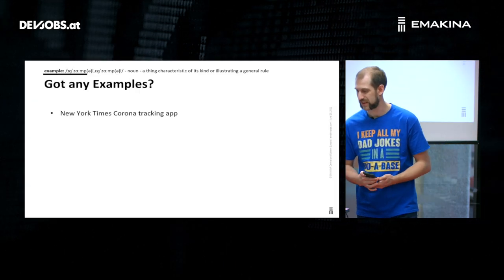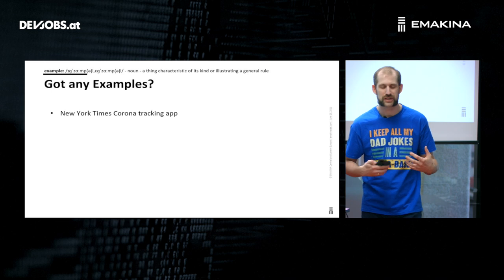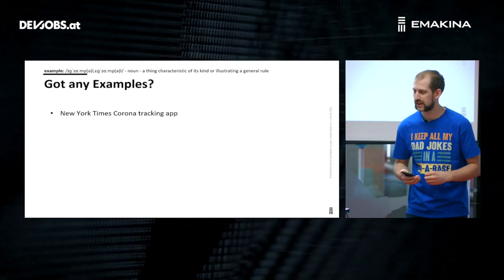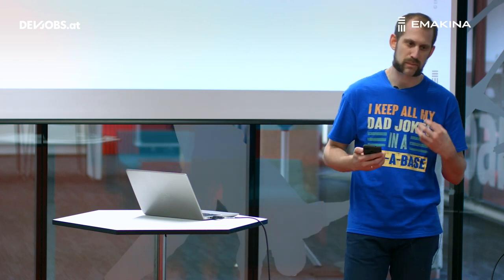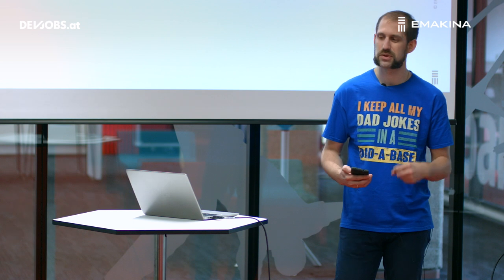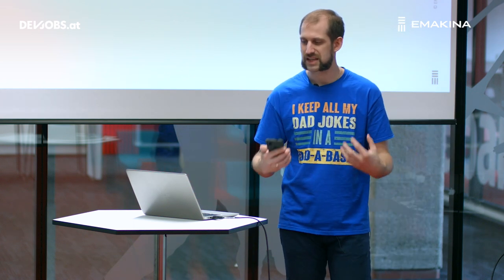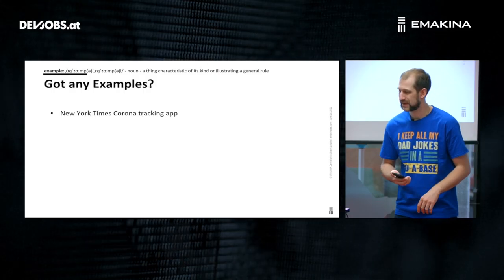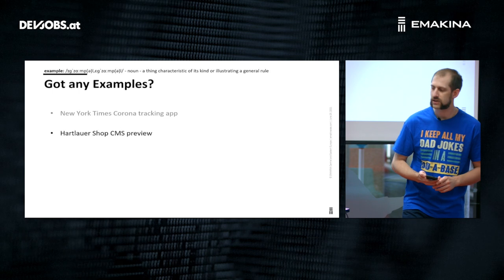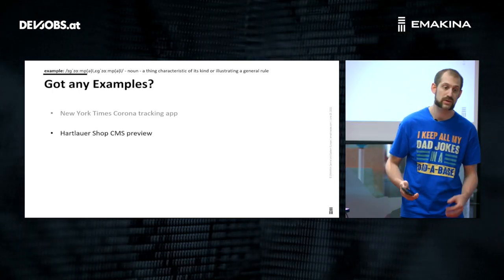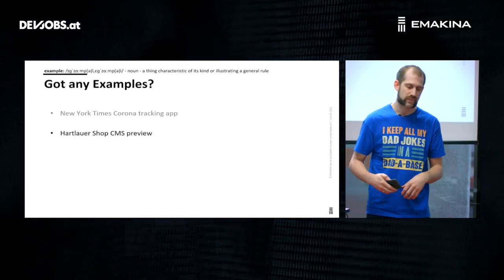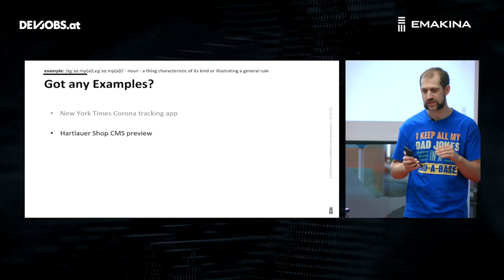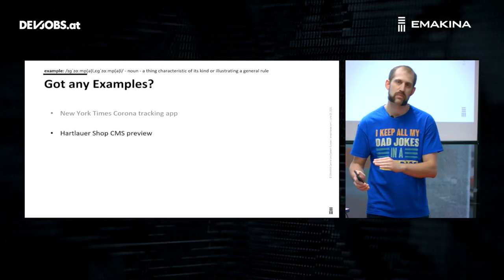Let's take a look at some examples. SvelteKit originally stems from a requirement needed by the New York Times Corona tracking app, because one of the masterminds behind Svelte and SvelteKit, Rich Harris, works at the New York Times and they needed something bigger — a full-blown application framework. That's how it got started. Another thing I built for one of our clients is the Heartblower Shop CMS Preview. Because Svelte is so lightweight, it's easy to build on top of an existing full-blown website and have that surgical DOM update happening in the background.